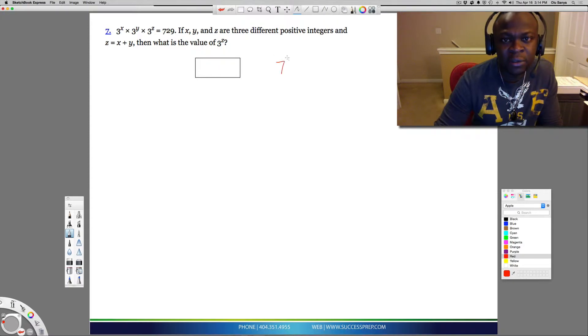For example, if I said 7 to the 2 times 7 to the 3, the way you calculate this is, because this is a multiplication of these two exponents, but because these bases are the same, they're both 7, what you do with the power is you add it. So that's 7 to the 5. If this was a division, you would be subtracting the powers.